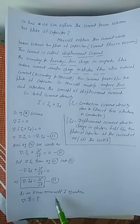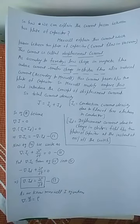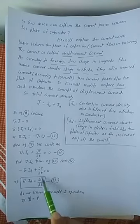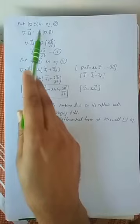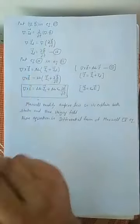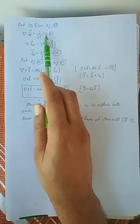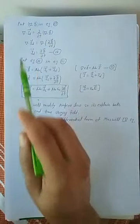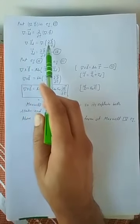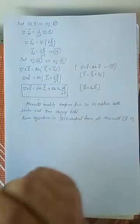From Maxwell's first equation, discussed in the last lecture, del dot D equals rho. We substitute this into equation number 17, replacing rho with del dot D. So del dot Jd equals del over del T of (del dot D) equals zero. Since the del operator and del over del T are independent, we interchange them, giving del dot Jd equals del dot (del D over del T). Therefore Jd equals del D over del T. This is equation number 18.